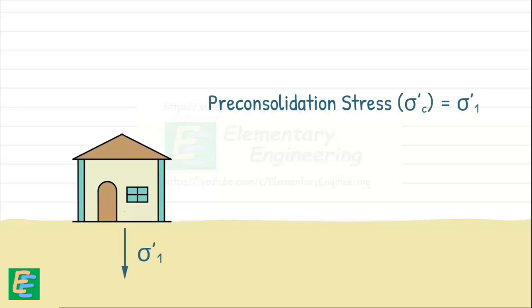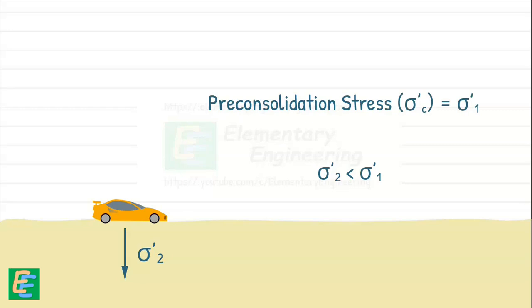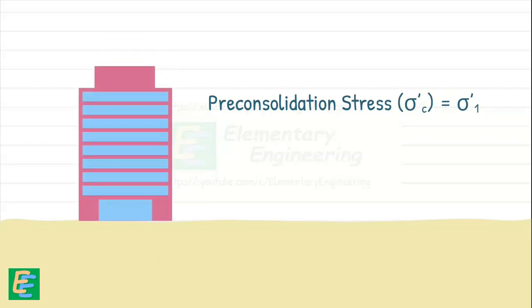Now if the load has been removed for any reason and soil is loaded with lesser stress, say sigma prime two, then still soil's pre-consolidation stress remains sigma prime one. On the other hand, if we load this soil with higher stress than sigma prime one, say it is sigma prime three, then pre-consolidation stress has become sigma prime three as this is the highest stress soil has ever experienced.